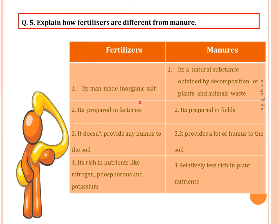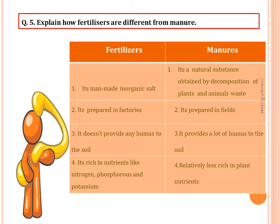Question five: explain how fertilizers are different from manure. Fertilizers are man-made; manure is a natural substance obtained by the decomposition of plant and animal waste. Fertilizers are prepared in factories; manure is prepared in fields. Fertilizers don't provide any humus to the soil; manure provides a lot of humus. Fertilizers are rich in nutrients like nitrogen, phosphorus, and potassium, whereas manure is relatively less rich in plant nutrients.